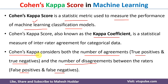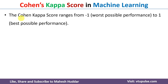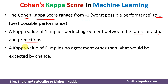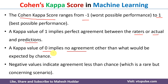Cohen's kappa score ranges between minus 1 to plus 1. If the value is plus 1, it implies perfect agreement between the two raters — that is, between the actual and predicted values. If the kappa score is equal to 0, it indicates no agreement. If it is a negative value, it indicates a negative agreement between the actual and predicted values. So the kappa score will be in the range of minus 1 to plus 1.